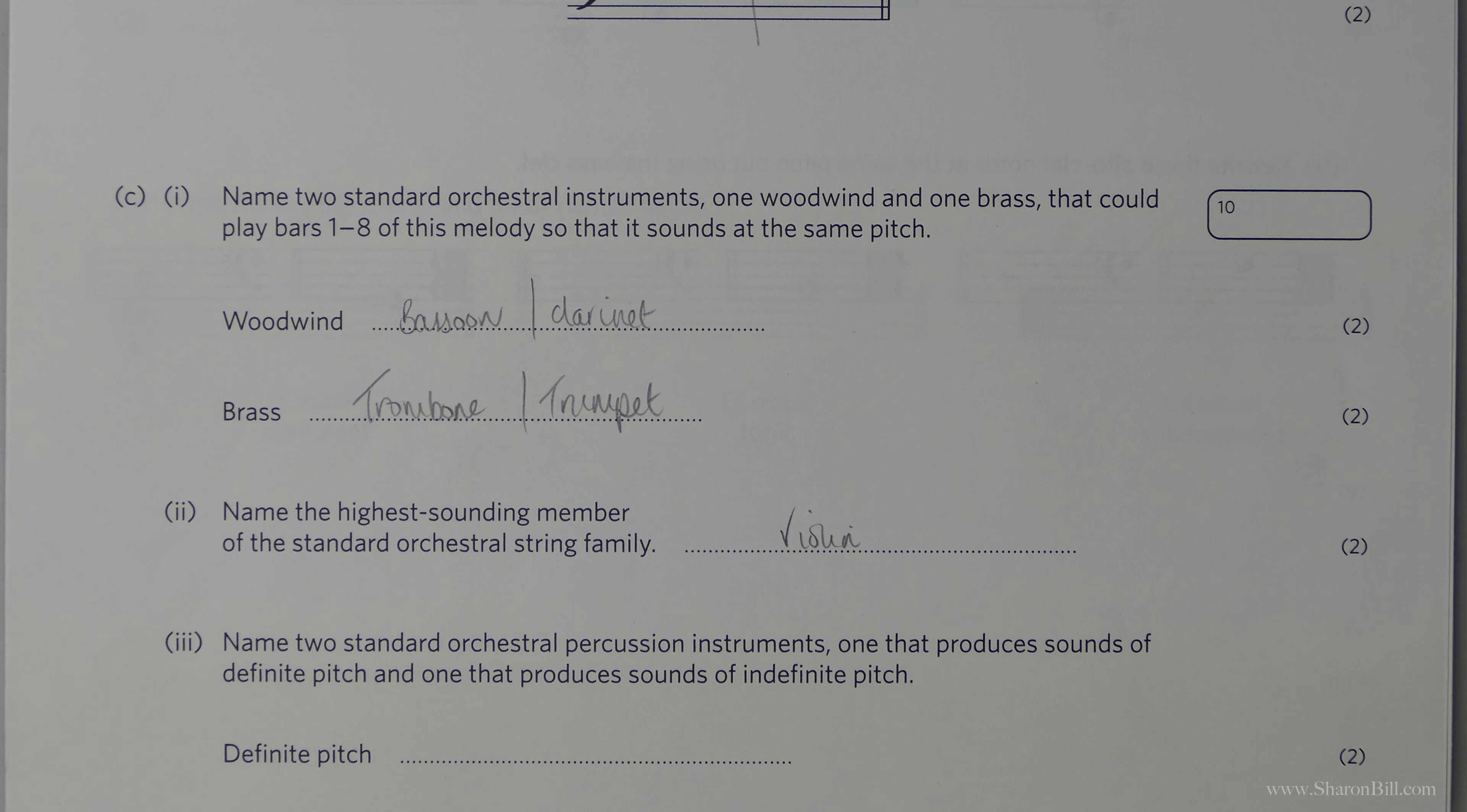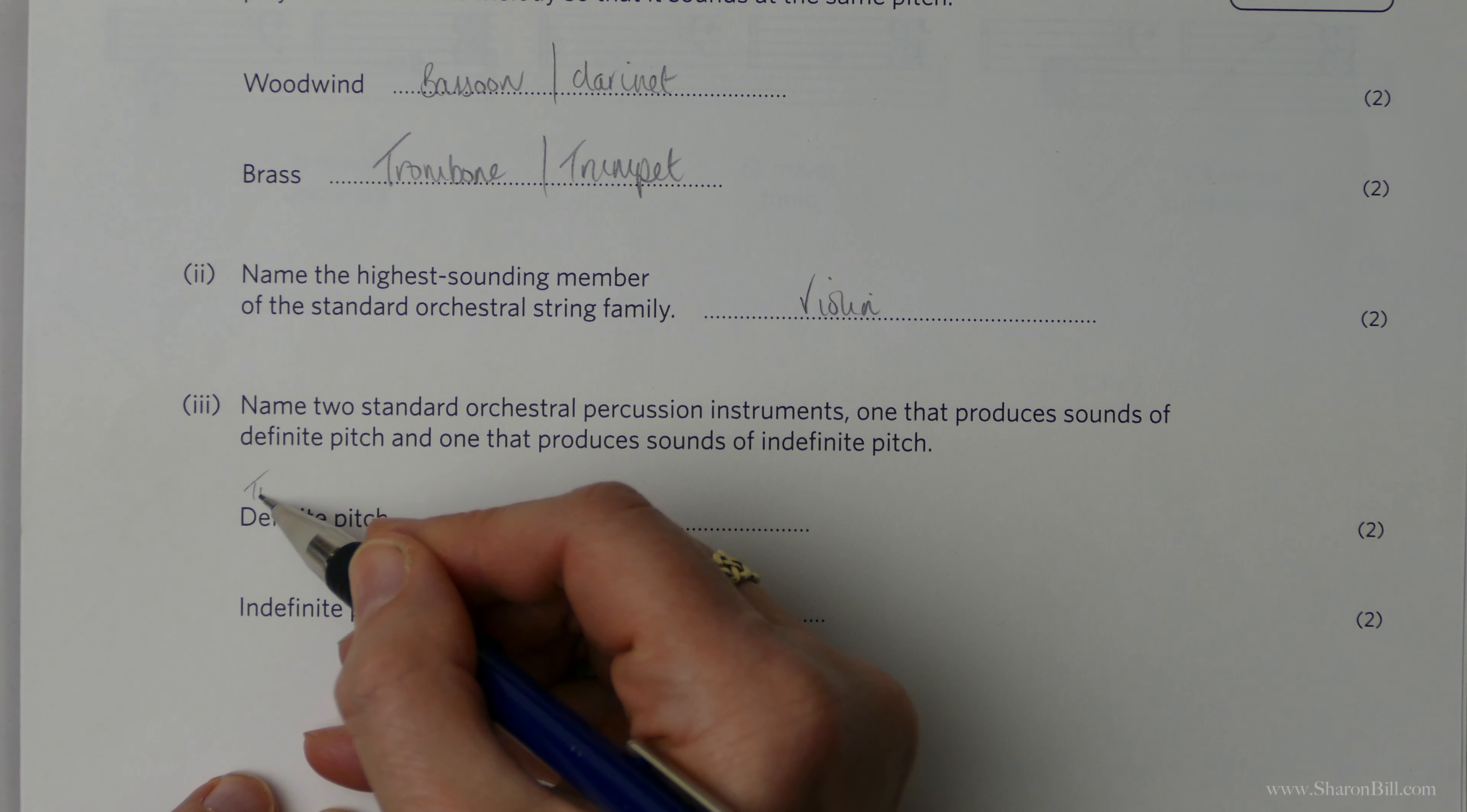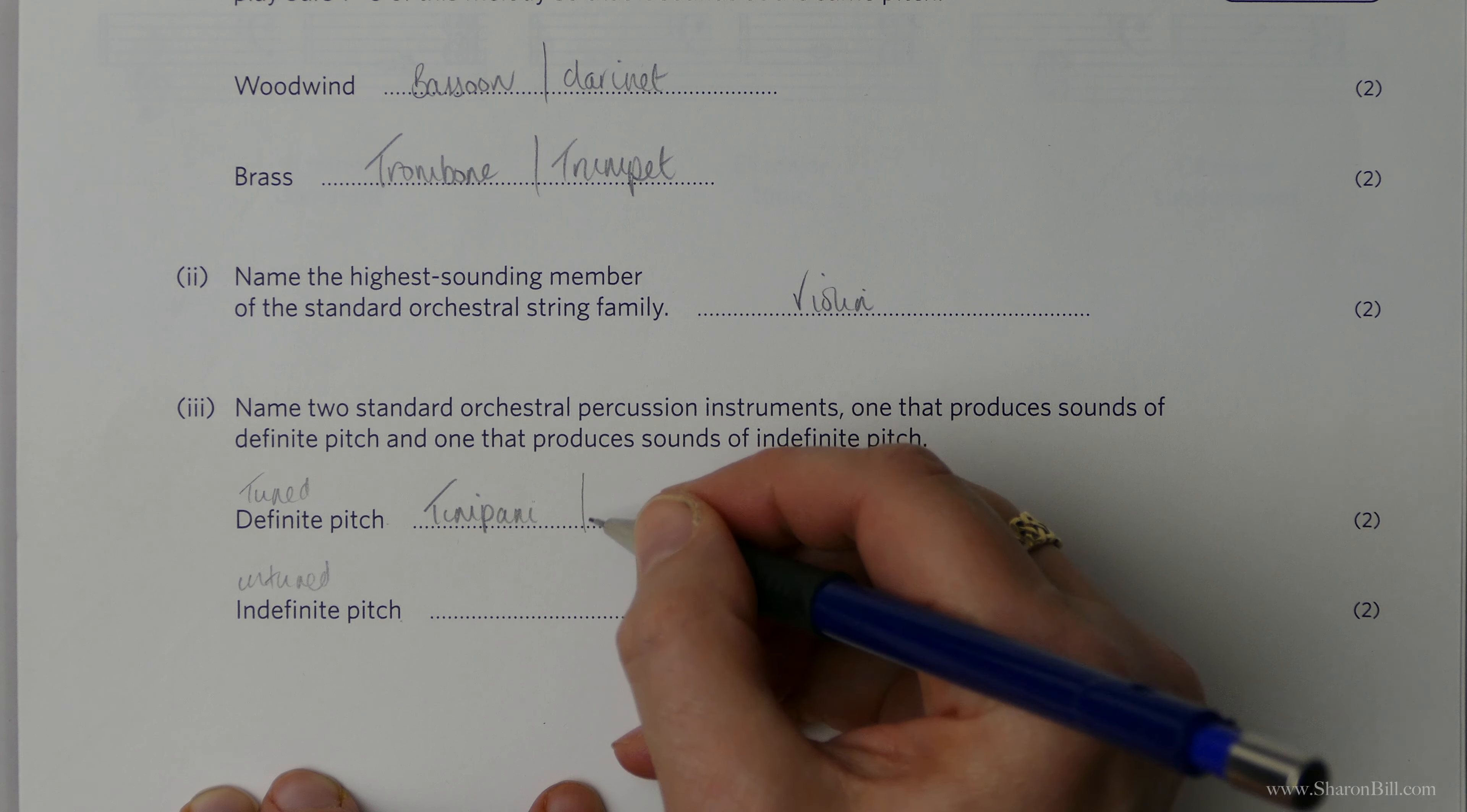Well, then we're asked two standard orchestral percussion instruments, one that's definite pitch, one that's indefinite. So that's tuned, where we could actually play a melody. And that's untuned, just a percussive sound. So the tuned percussion, well, timpani are tuned. They're usually tuned to the tonic and dominant, the big kettle drums. Or, more obviously, you could play a tune on something like tubular bells. Because the percussion in the family is basically things that you hit. So you hit these tubular bells with a mallet. Or you could say glockenspiel or xylophone.